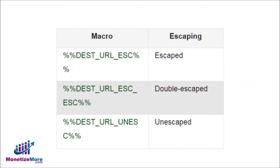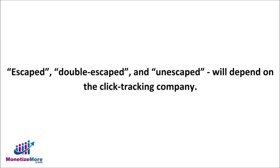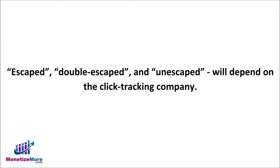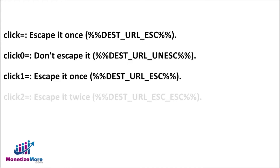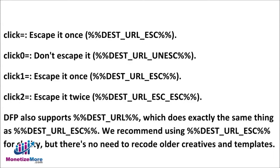If you notice the format of the Destination URL Macro, you'll see a common snippet of code: ESCAPE. There are ESCAPED, DOUBLE ESCAPED, and UNESCAPED click-through macros. Whichever you use will depend on the click tracking company. You may find which of the three macros the company requires as specified in the tag with the click equals string in the third-party ad tag or custom creative code in DFP. DFP also supports an alternative format that does exactly the same thing. We recommend using the second one for clarity, but there's no need to recode older creatives and templates.